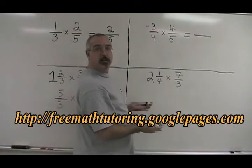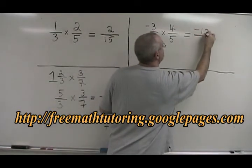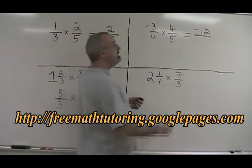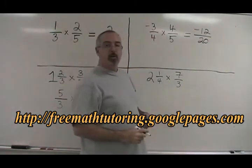Negative 3 times 4 is negative 12. 4 times 5 is 20. We have negative 12 over 20.